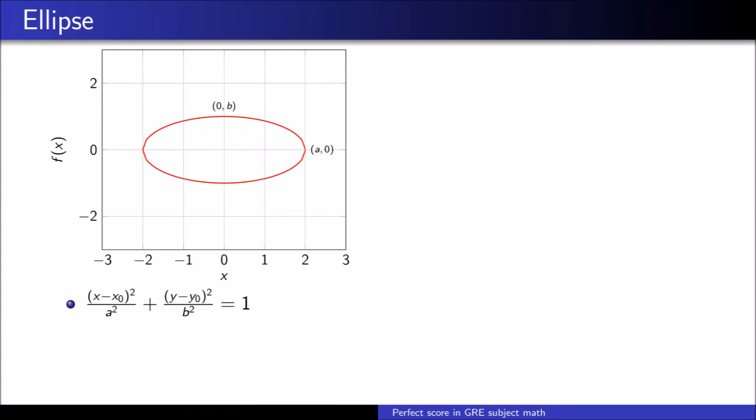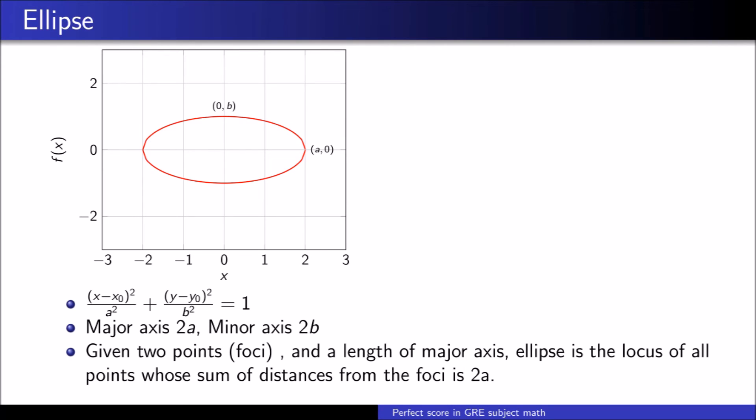The ellipse has a similar equation. Just note that a is not necessarily equal to b. When a is bigger, we say that 2a is the length of the major axis and 2b is the length of the minor axis. We also have a notion of locus to define the ellipse. To do that, we set two focus points or in plural, foci. And the ellipse is the locus of all points whose the sum of distances from the foci is 2a. Meaning, given two focus points and a number a, we have an ellipse. 2a should be bigger than the distance between the foci in order to avoid degenerated cases.